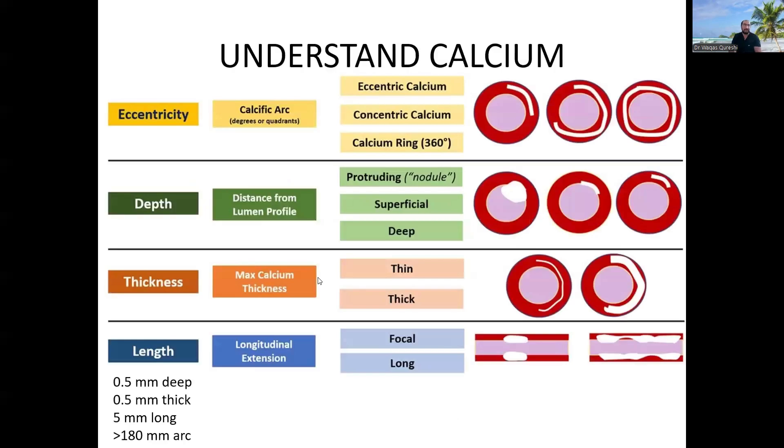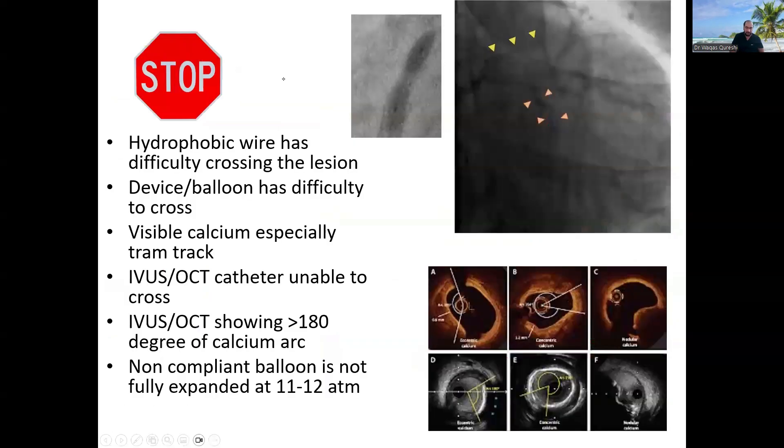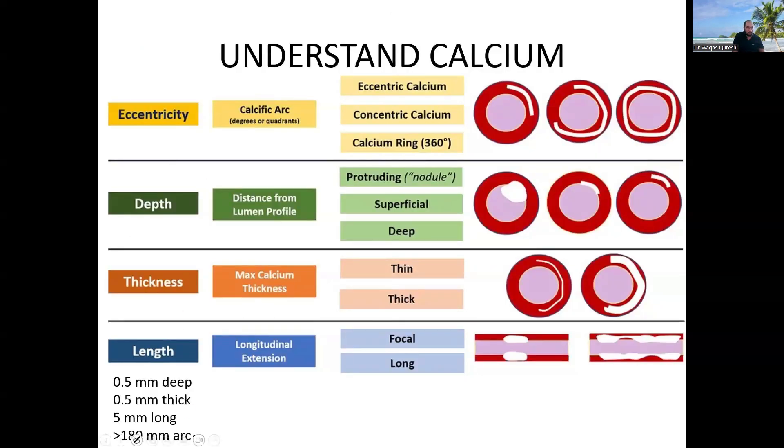So first, we need to understand the calcium. There are four things that we look in the calcium. These are all practical in nature. First, you need to define if the calcium is eccentric or is it concentric. The response to an atherectomy device is much better if there is more than 180 degrees of calcium. On the other hand, if it is more than 180 degrees of calcium, the stent expansion may not be adequate. So arc of the calcium, you need to look at that.